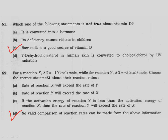If you only have delta G free energy change values, you cannot determine the reaction rate. So the correct answer is option D: no valid comparison of reaction rate can be made from the above information.